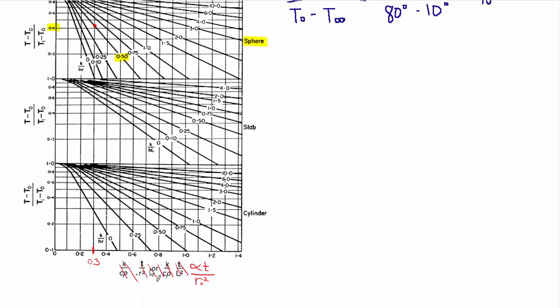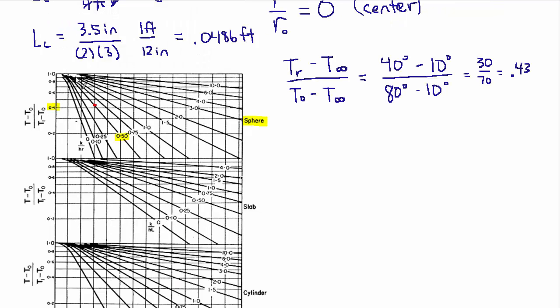So that's how we're going to look it up along the y-axis and then along the x-axis this is what we're looking for. I cross this out because in the chart in the MERM it's actually alpha T over R0 squared. So we know alpha we know R0 we don't know T. So this is what we're looking to find. The other thing that we know is these sort of diagonal lines which is K over HR. So that's the next parameter we're going to compute.